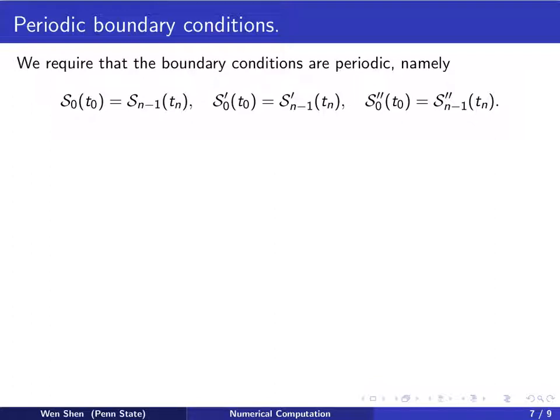So we require that the boundary conditions are periodic, that is, at t_0 and at t_n, they are the same. So to be specific, in formula, we would have S_0 evaluated at t_0 will be the same as the last polynomial, S_{n-1}, evaluated at t_n, as well as the first derivative of them and the second derivative of them.